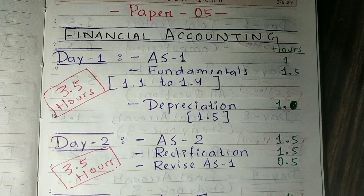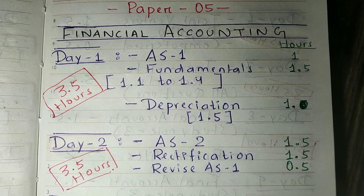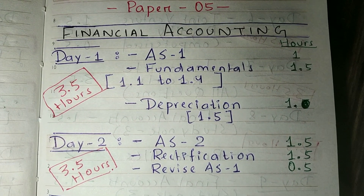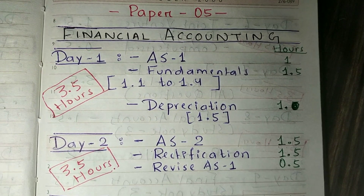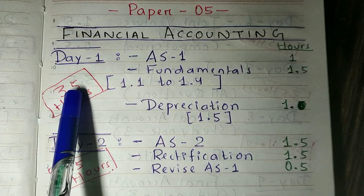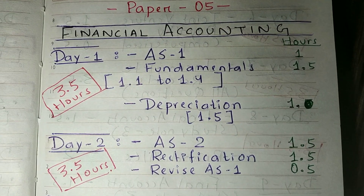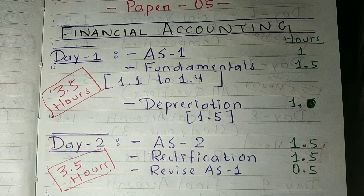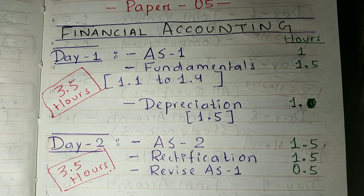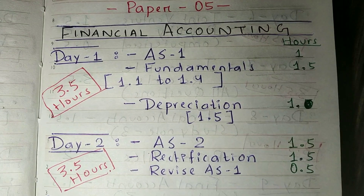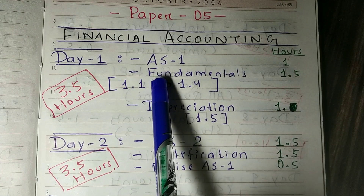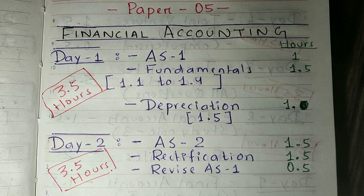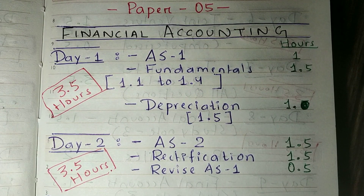Hi guys, thank you so much for watching my channel The Witty Turtle. Today we are going to discuss the study plan — basically the revision plan — for Paper Number 5, which is Financial Accounting. There are a total of five accounting standards, and we are going to cover one accounting standard every day for the first five days. So on the first day, you have to complete Accounting Standard 1.